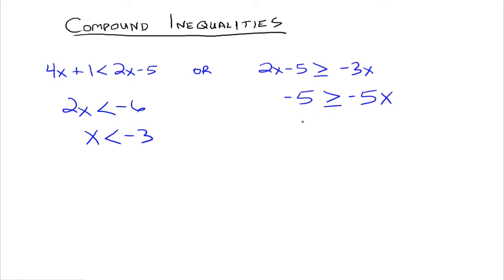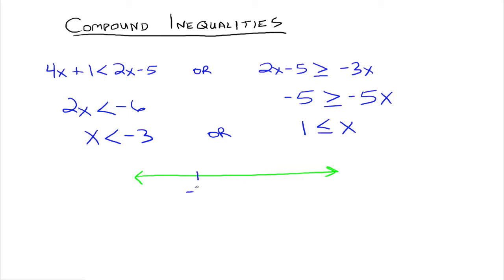Negative 5 divided by negative 5 is 1, which is less than or equal to x. We've got the word 'or' in between them. Graphically, x is less than negative 3 — here's negative 3, and we shade off to the left. Negative 3 is not included, so we have a parenthesis or open circle.